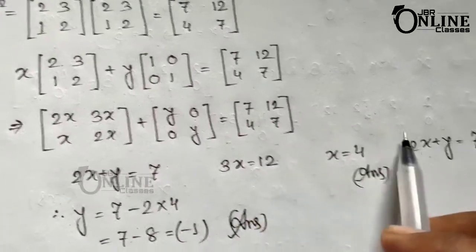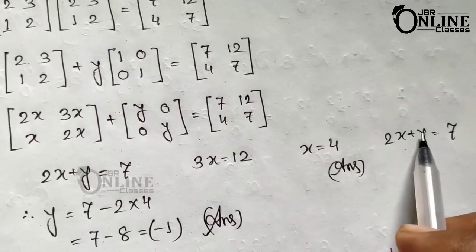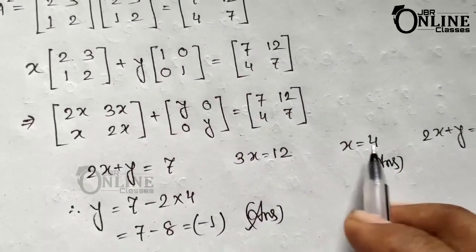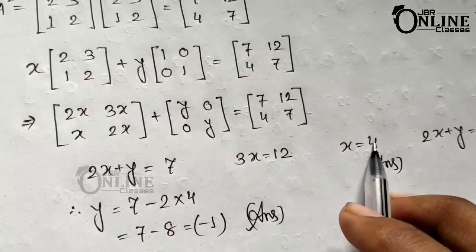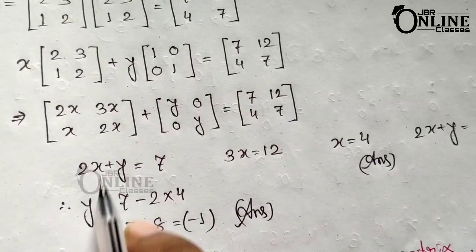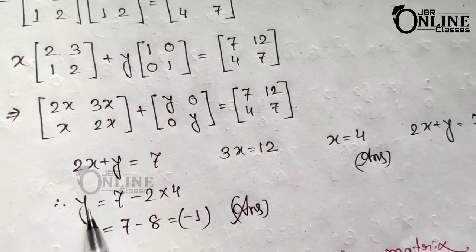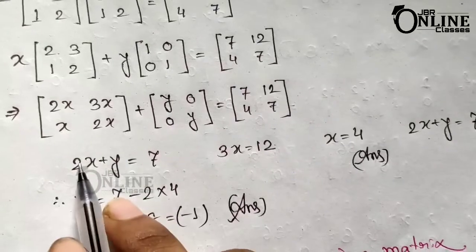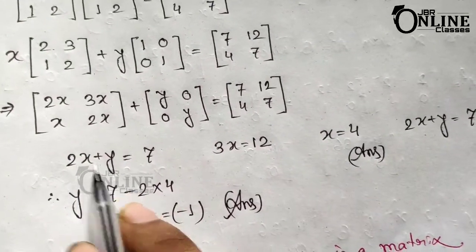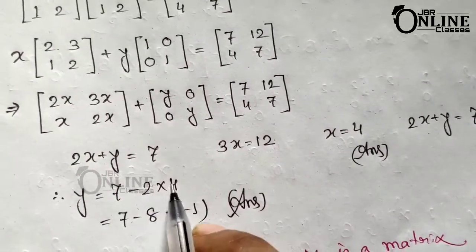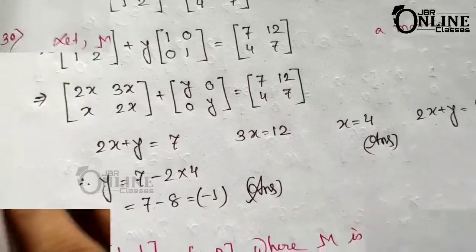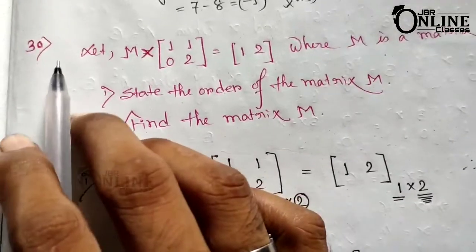The last element also gives 2x plus y equals 7. Since x = 4, substituting: y = 7 minus 2 times 4 = 7 minus 8, so y equals minus 1.